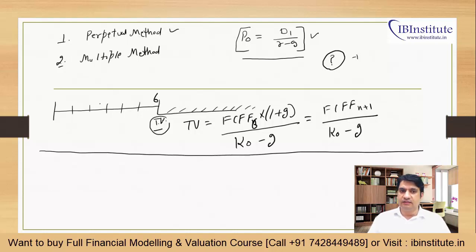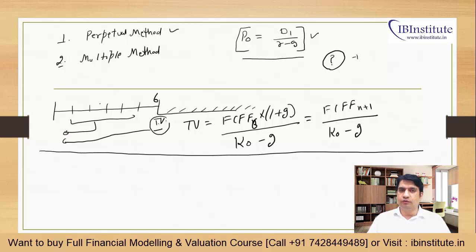Once terminal value is obtained, you take the present value of all explicit period cash flows and also the present value of the terminal value — because the terminal value sits at the end of year six. Combining both present values gives you the equity value or enterprise value, depending on which model you have applied.